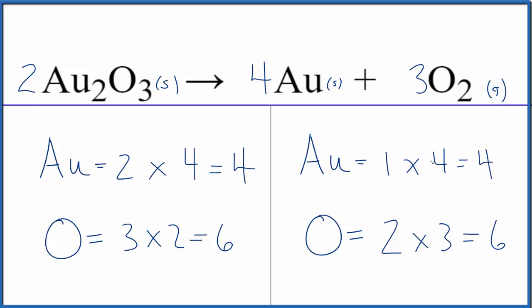And this equation is balanced. Often when you have that odd number there, if you multiply by two to get it to an even number, that makes balancing the equation much easier.